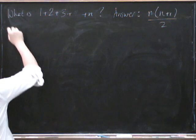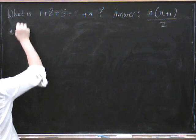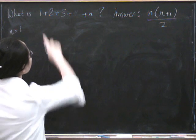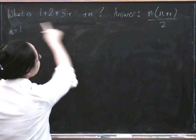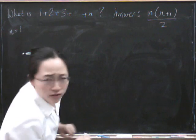So first we do n equals 1. Well, it's clearly true then because obviously if n equals 1, the left is adding up all the numbers up to n, which is not very difficult—it's just 1.